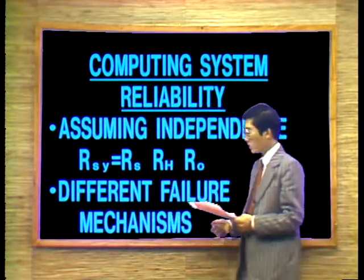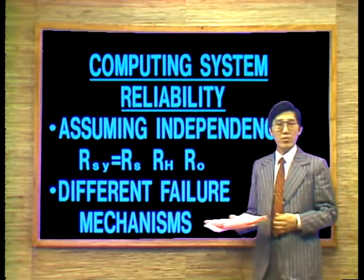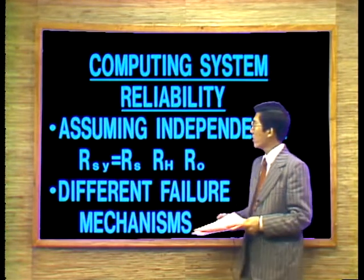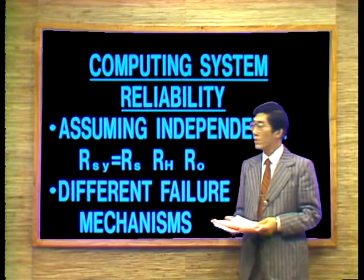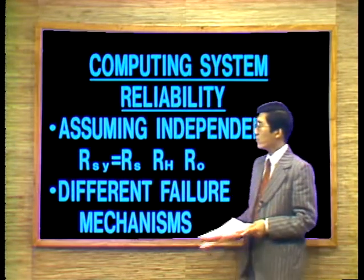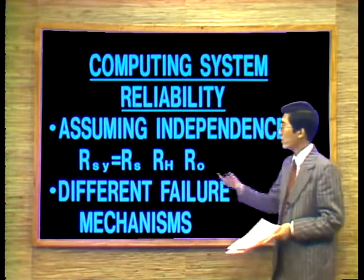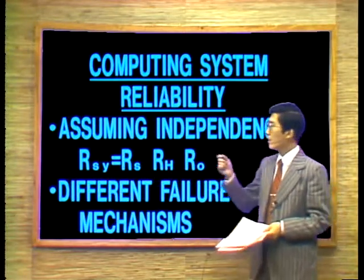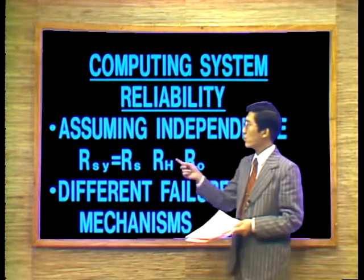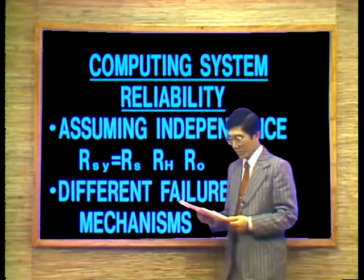The subject today is software reliability models. Let us review the reliability theory about computing systems. We know that computing systems involve three factors: hardware, software, and the human being — the operator. At the very early stage of reliability theory development, if we assume independence between these three factors, then the reliability of the system will be the product of the reliability of the software, the reliability of the hardware, and the reliability of the operator.